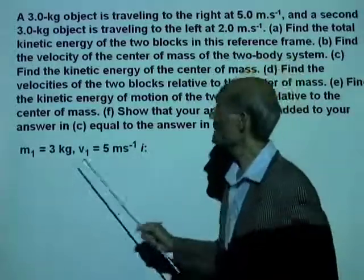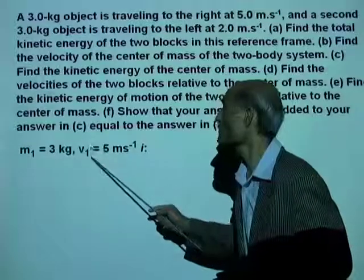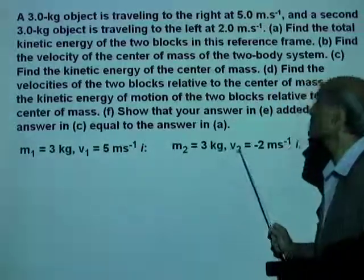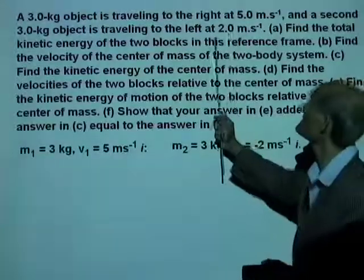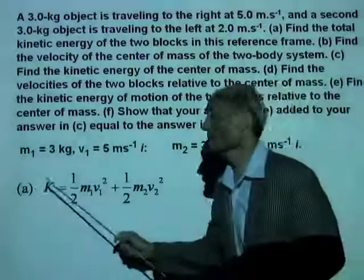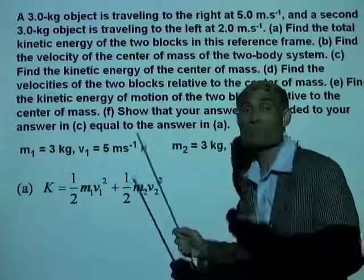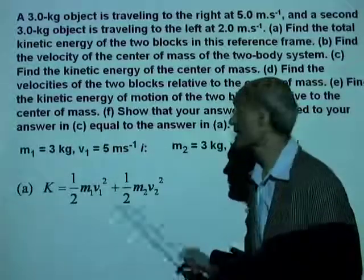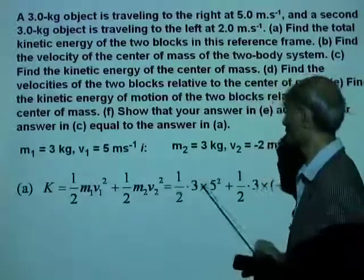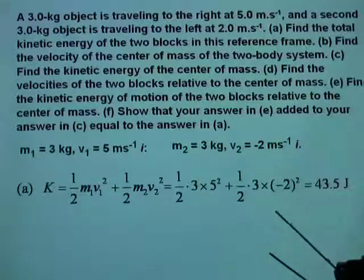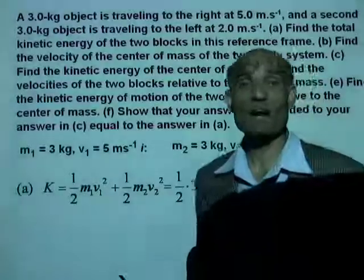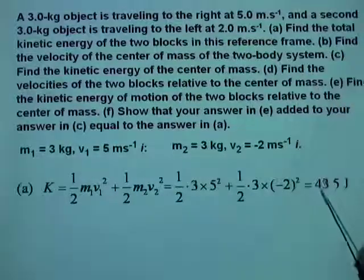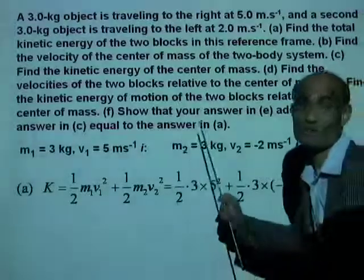Let's look at the data. M1 equals 3 kg, V1 equals 5 m/s î. M2 equals 3 kg, V2 equals negative 2 m/s î - moving to the left. In Part A, the kinetic energy of these two objects measured from the lab reference frame is one-half M1V1² plus one-half M2V2². Using all the given values, that gives you 43.5 joules. So 43.5 joules is the kinetic energy of the two objects measured from the laboratory reference frame. Remember this value - we will need it for the last part.